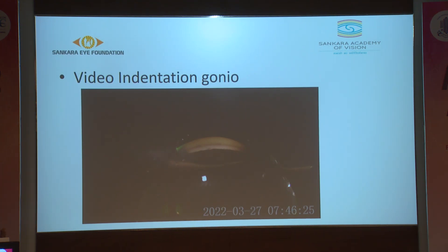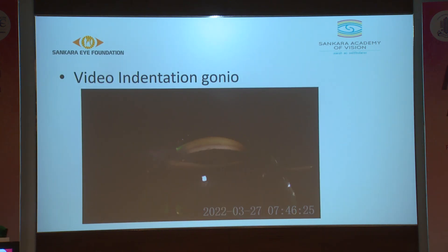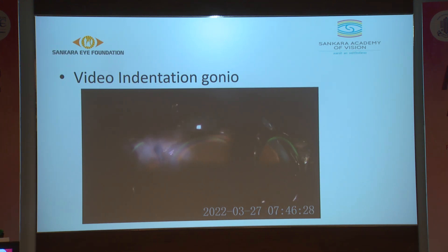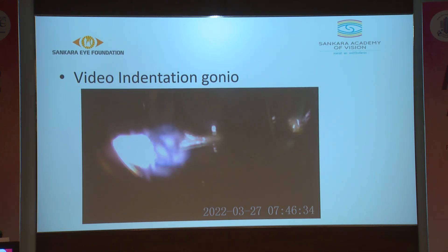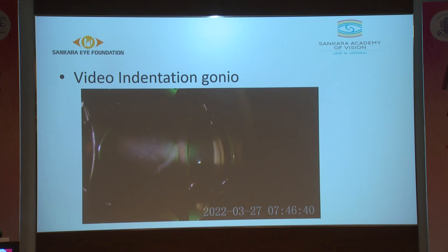This is a video of indentation gonioscopy demonstrating how to differentiate oppositional angle closure from synechial angle closure. Initially, no angle structures are seen. On indentation, we are not able to see any structure and can see that the iris is attached to the angle — this is a case of peripheral anterior synechiae.